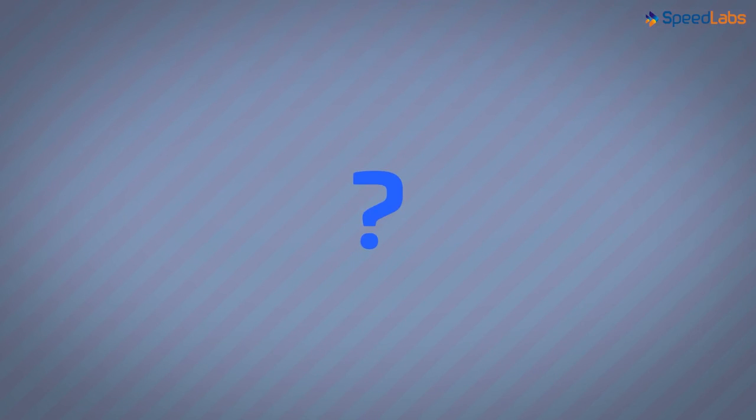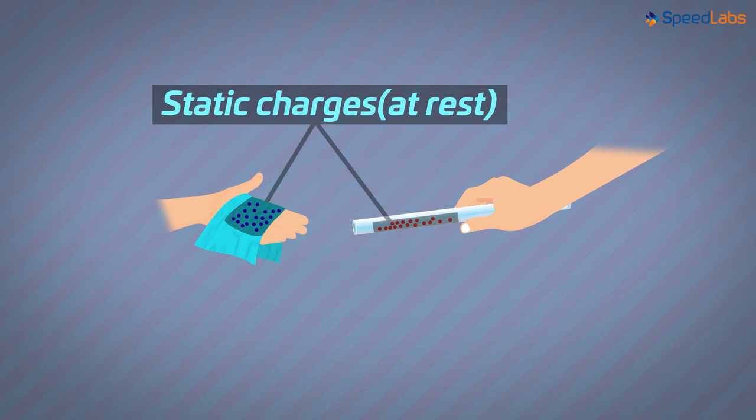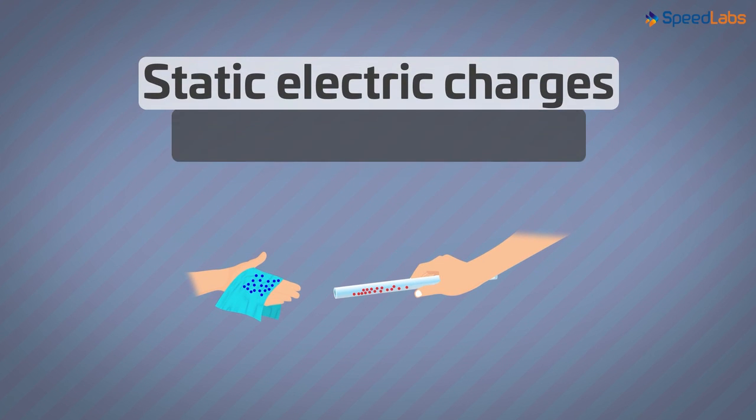So what did we learn here? We learned that electric charges are developed when we rub two objects together. These charges are static. That is, they are lying on the surface of the object and not moving. Hence we also call them static electric charges or electrostatic charges.